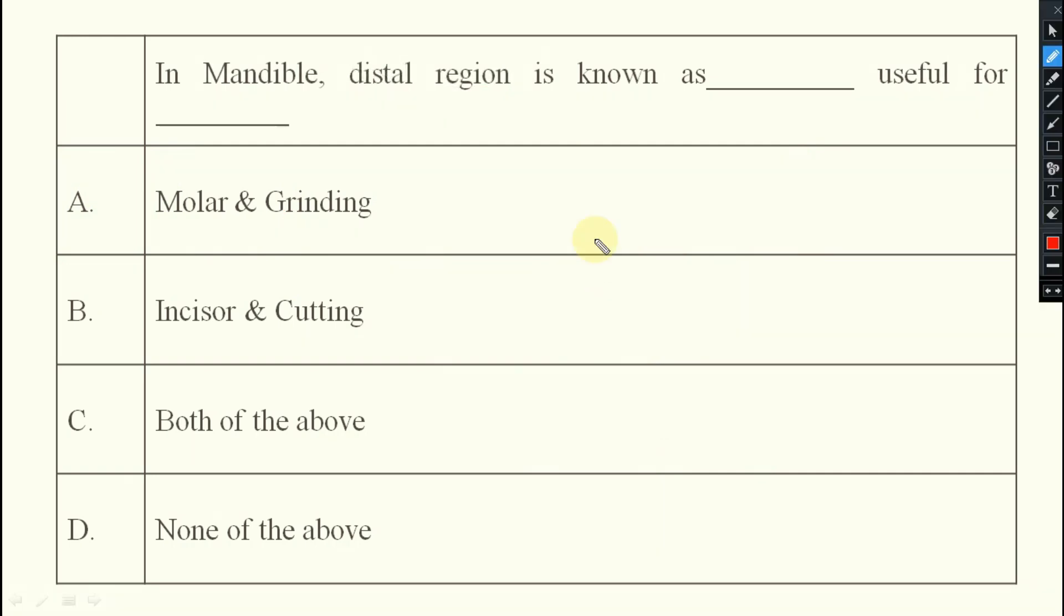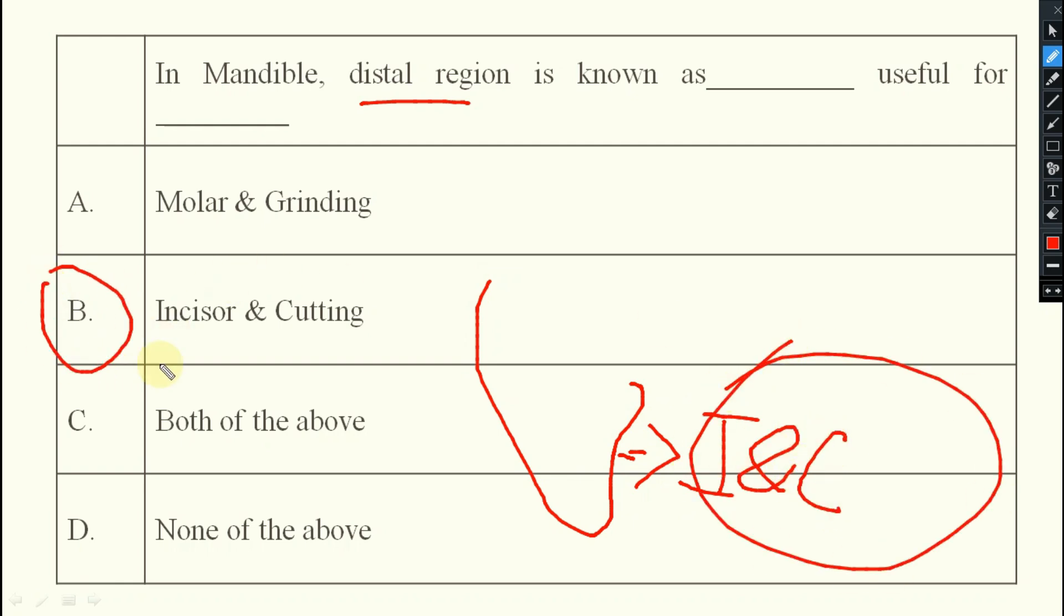So the next question is, in mandible distal region, the lower side, it is known as your incisor region. And incisor means what is the function? Cutting teeth will be there. So option B will be your answer, incisor and cutting.